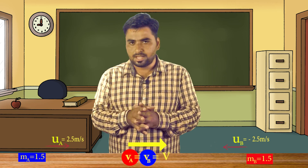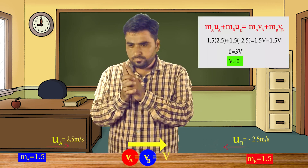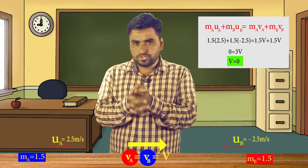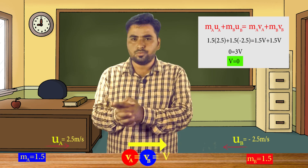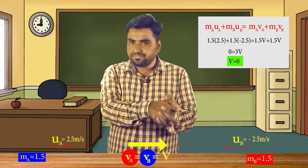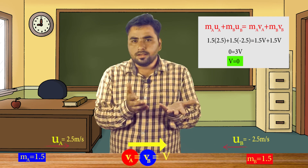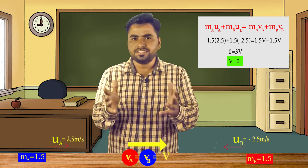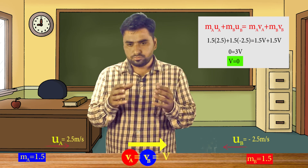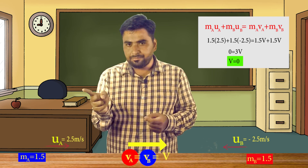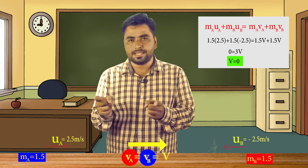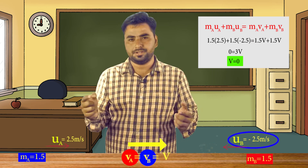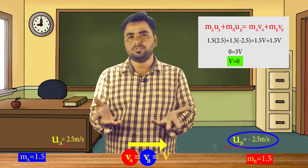Since they stick together they have a common final velocity V. Substituting into conservation of momentum: 1.5 × 2.5 + 1.5 × (−2.5) = (1.5 + 1.5) × V. The left side terms cancel — giving 0 = 3V, so V = 0. The objects stick together and do not move. Note: the second object's velocity is taken as −2.5 m/s since it moves in the opposite direction.